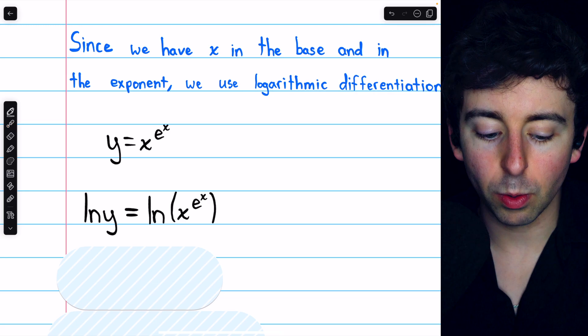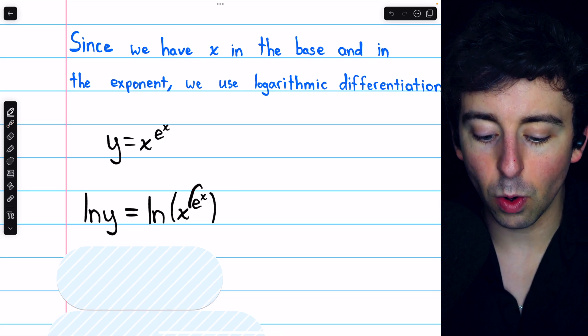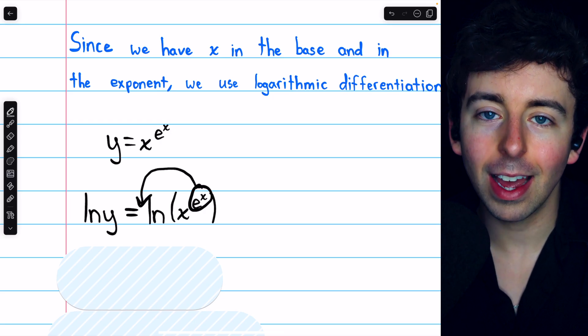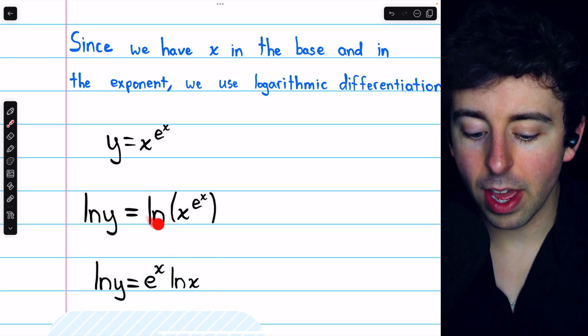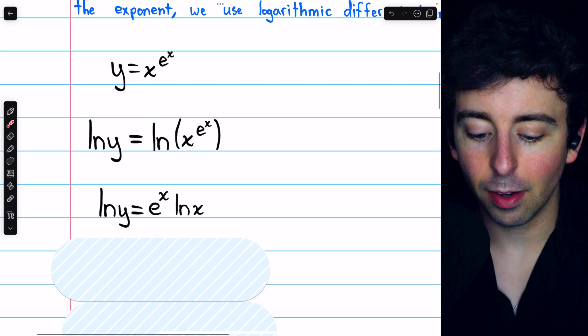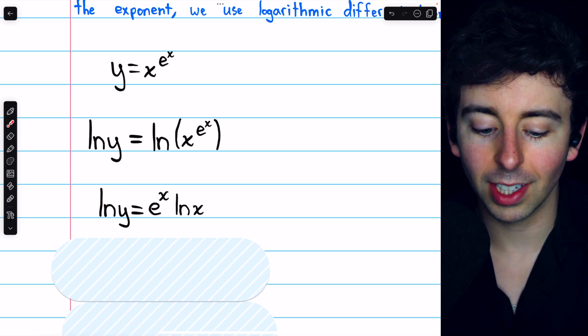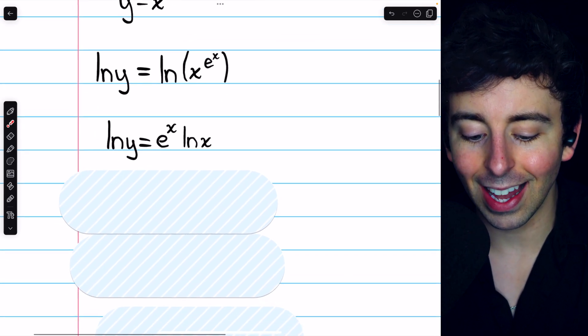This is where we use our log rules. x to a power in a log, we can rewrite with the power brought outside as a factor. So this we can rewrite as this, bringing that power outside, so we have e to the x times ln x. And of course, we still have ln y on the left.